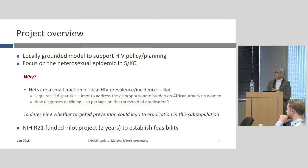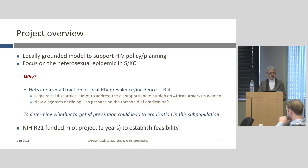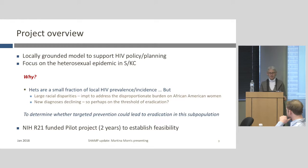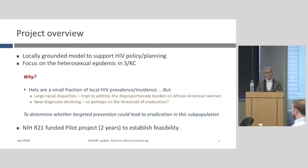In terms of overview, there are lots of different modeling frameworks out there. What our group is really focused on is developing tools that can be locally grounded — so you don't have a 'Franken model' where some data comes from one country, some from another, or some is made up. The point is to locally ground the model, because HIV policy and planning is often done at a local or state level, and that's where resource allocation issues are particularly important.